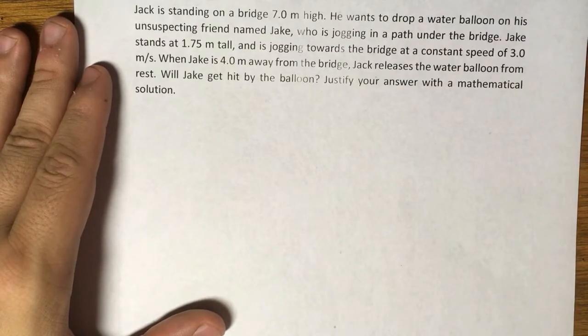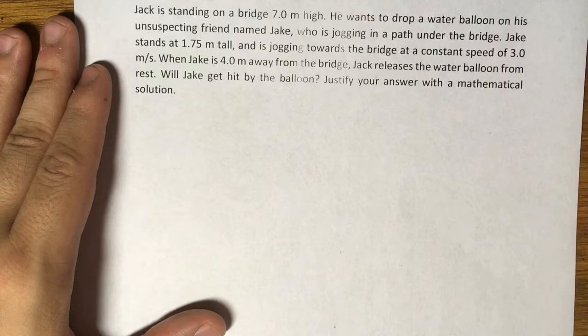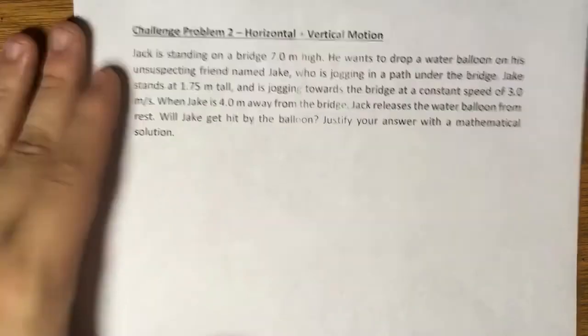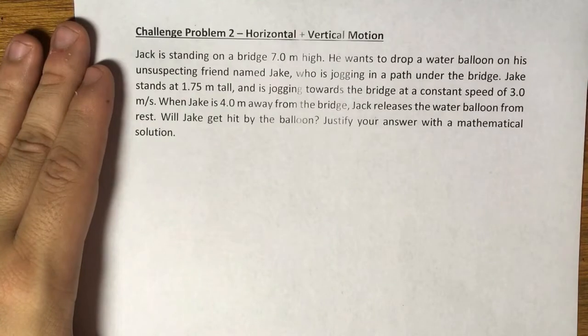Let's check the problem: Jack is standing on a bridge 7 meters high. He wants to drop a water balloon on his unsuspecting friend named Jake, who is jogging in a path under the bridge. Jake stands at 1.75 meters tall and is jogging towards the bridge at a constant speed of 3 meters per second.